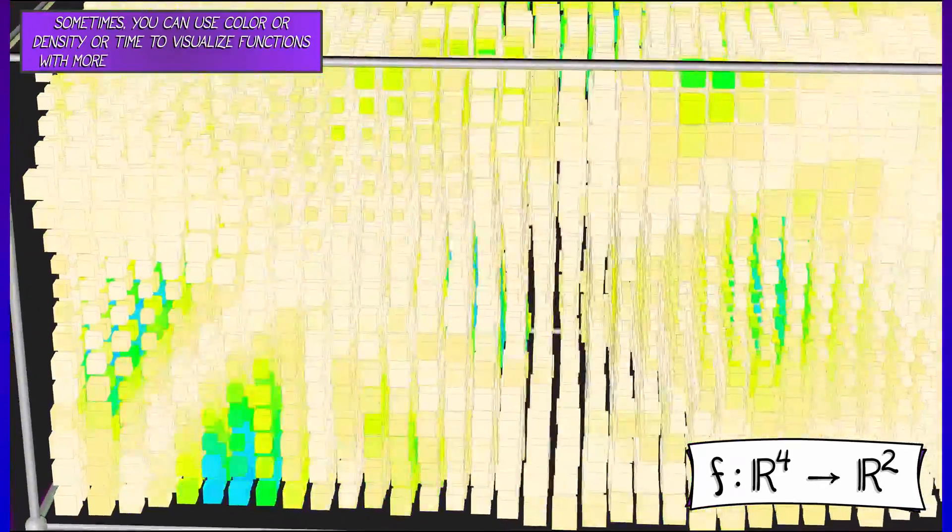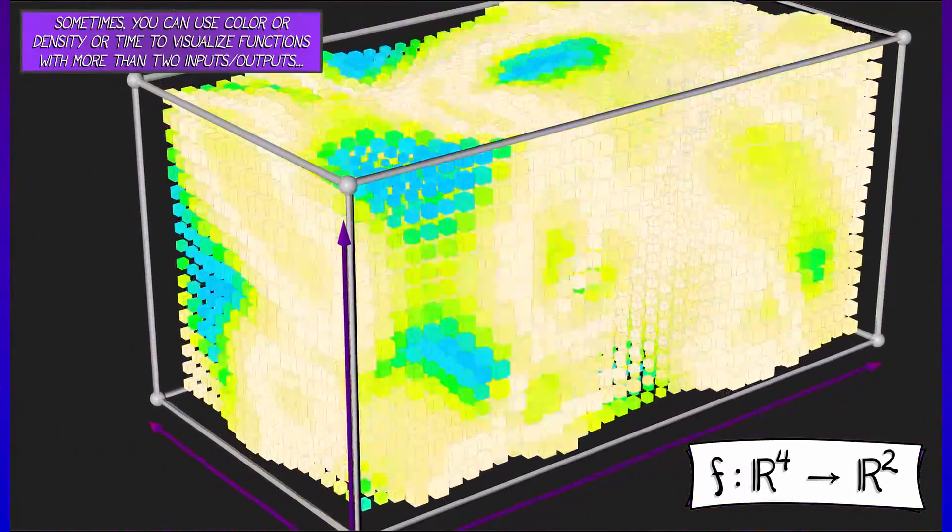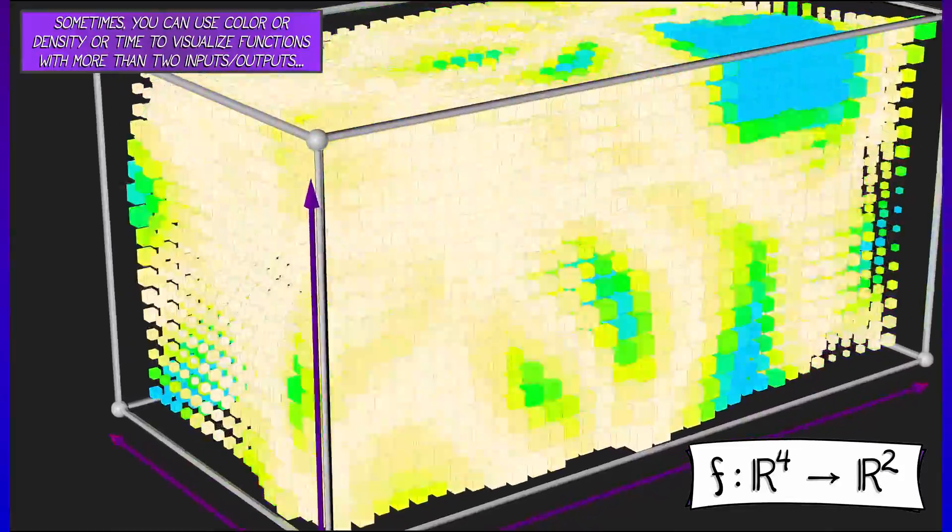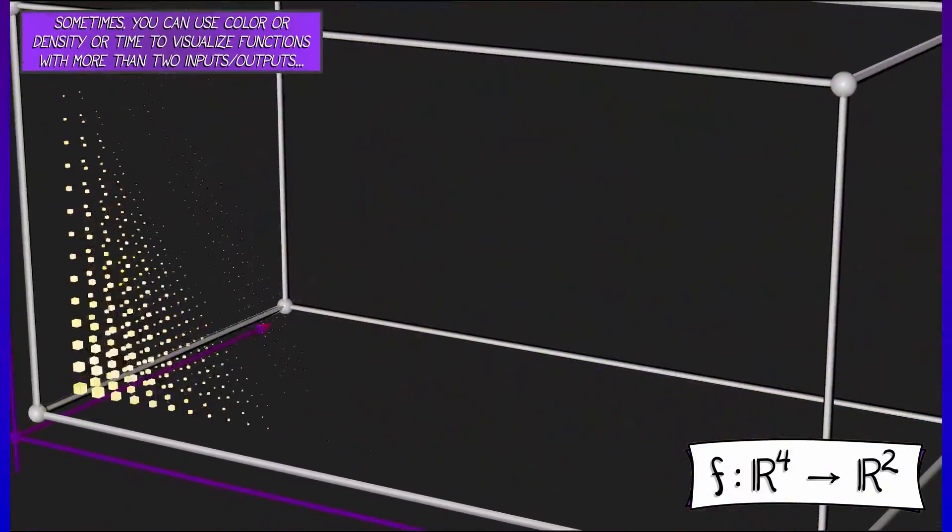Now, sometimes you can use things like color or density to visualize. Here's the image of a function that has four inputs, x, y, z, and time, and then two outputs representing color and density. You could do things like that.